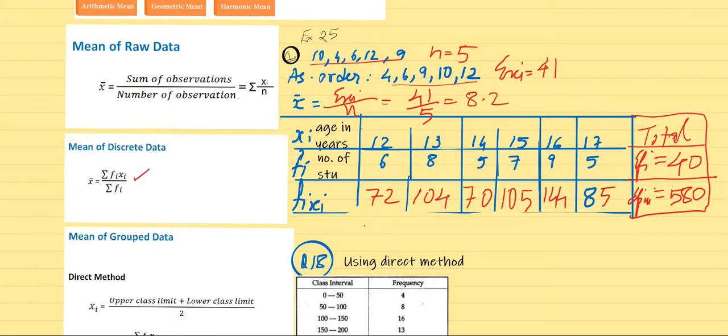So summation fi is 6 plus 8 plus 5 plus 7 plus 9 plus 5, that equals 40. And we get 72 plus 104 plus 70 plus 105 plus 144 plus 85, total as 580. As far as the formula is concerned, x bar equals summation fi xi upon summation fi. So 580 divided by 40 gives us 14.5. Now age was in years, so don't forget to write units. So 14.5 years. This is the mean of discrete data.